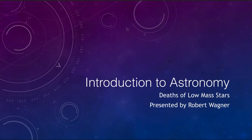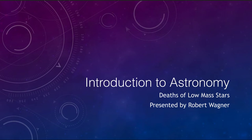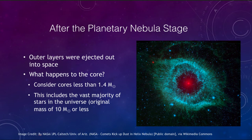Greetings and welcome to the introduction to astronomy. In this video we are going to talk about the deaths of low mass stars, and by low mass we mean stars similar to our Sun. We will look at what the deaths of those stars are like and then later on we will look at what other stars are actually like. We started looking at this previously, and one of the stages we see is the planetary nebula phase of a star, something that will happen to stars like our Sun in which the outer layers are ejected out into space.